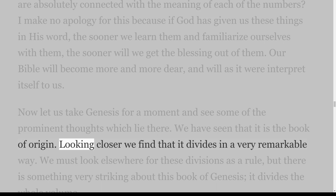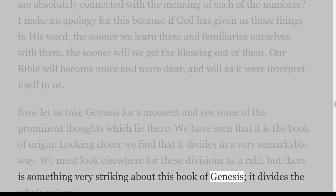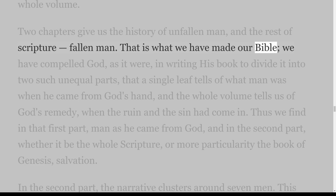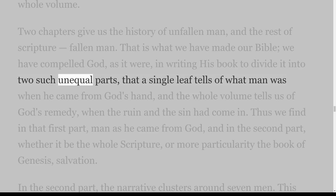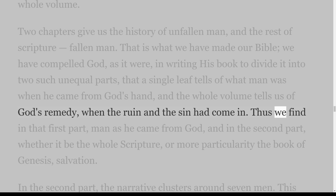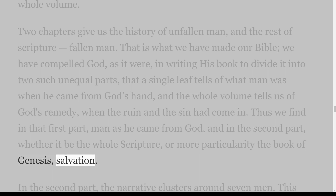Now let us take Genesis for a moment and see some of the prominent thoughts which lie there. We have seen that it is the book of origin. Looking closer we find that it divides in a very remarkable way. Two chapters give us the history of unfallen man, and the rest of Scripture deals with fallen man. That is what we have made our Bible — we have compelled God as it were, in writing His book, to divide it into two such unequal parts: a single leaf tells of what man was when he came from God's hand, and the whole volume tells us of God's remedy when the ruin and the sin had come in.